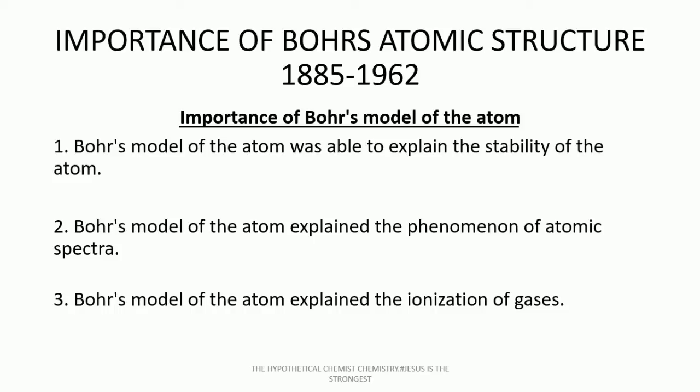The third point is that Bohr's model of the atom explained the ionization of gases. Under periodicity, we are going to learn about ionization energy as one of the periodic properties. Ionization energy is the minimum amount of energy required to remove one mole of an electron from an atom for that atom to form an isolated gaseous cation. Before ionization takes place, the atom must exist in the gaseous phase or state. The atom or element gains energy in the form of heat energy, and when it gains that energy, it is able to remove an electron.